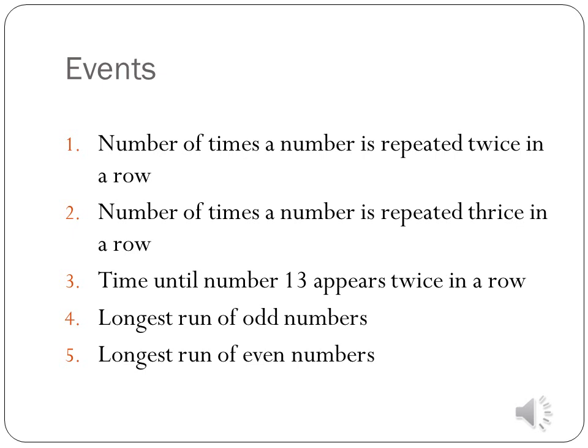The third event is: how many spins does it take for a lucky number, say 13, to appear consecutively twice? The fourth event is: if I spin a roulette for a given number of times, what is the longest run of odd numbers in all those spins? And the fifth event is: if I spin the roulette for a given number of times, what is the longest run of even numbers?